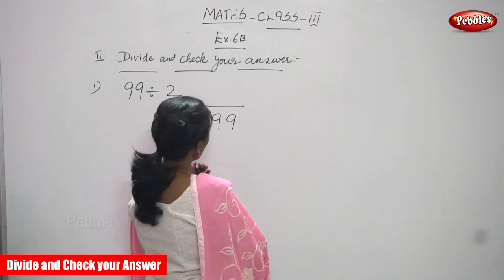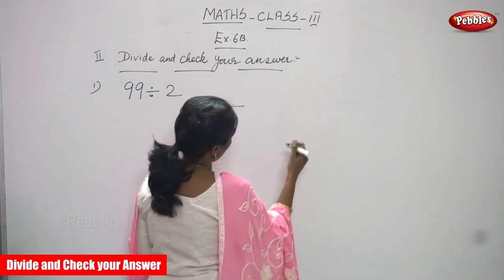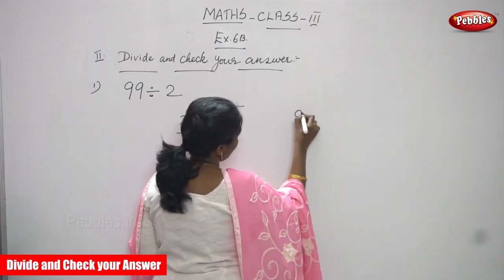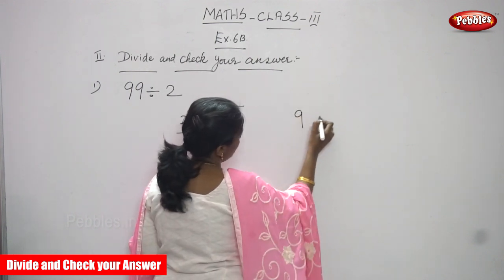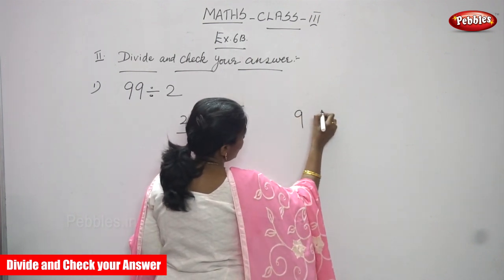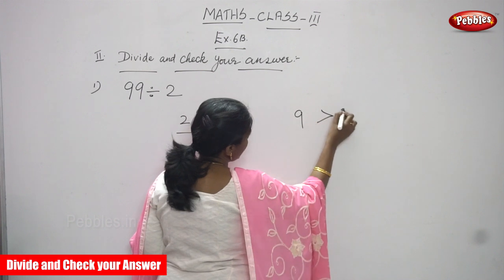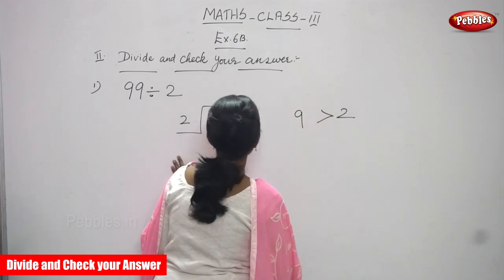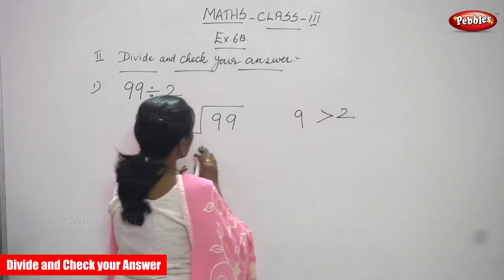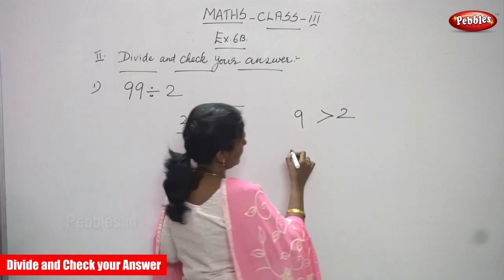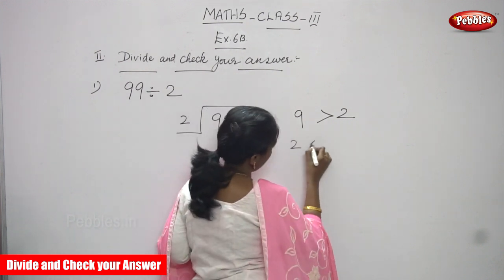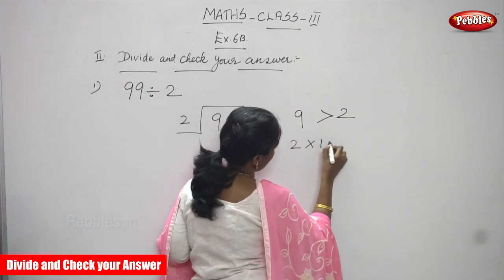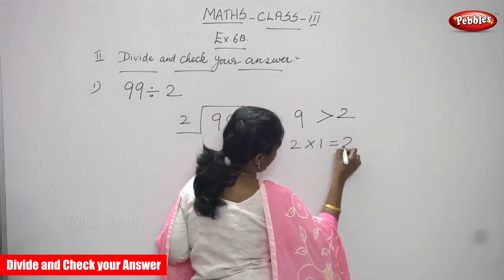So 9 is going to be compared with 2. You know that 9 is greater than 2, so it is enough to divide. You must use the 2 times table. So I write the 2 table here: 2 ones are 2.